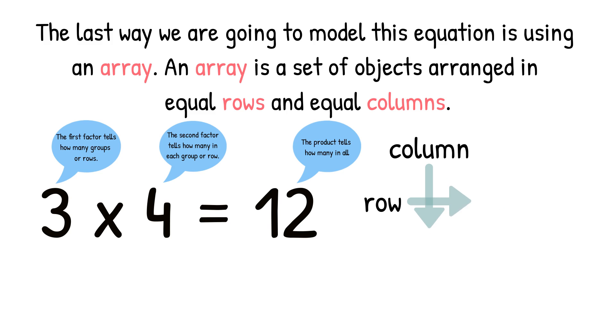So let's read this equation as 3 rows of 4. We're going to need 3 rows of circles with 4 circles in each row. This is called an array.